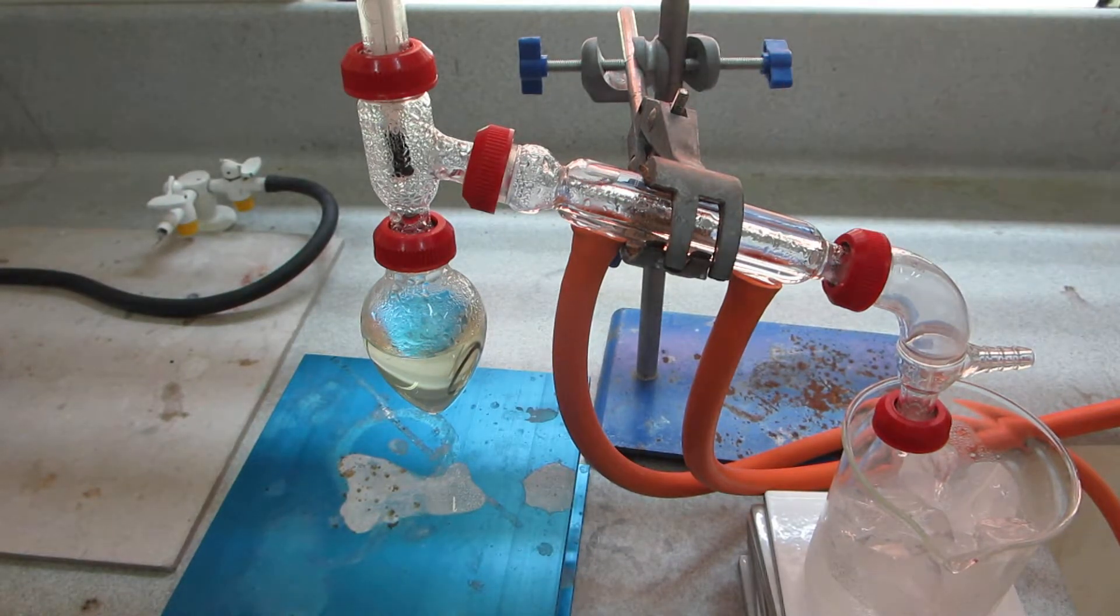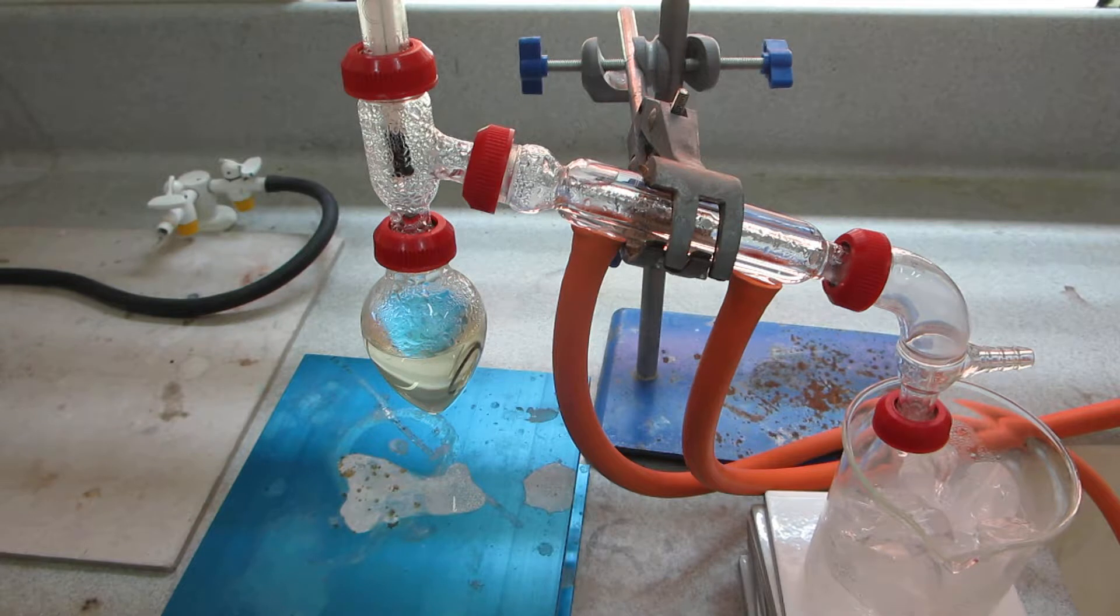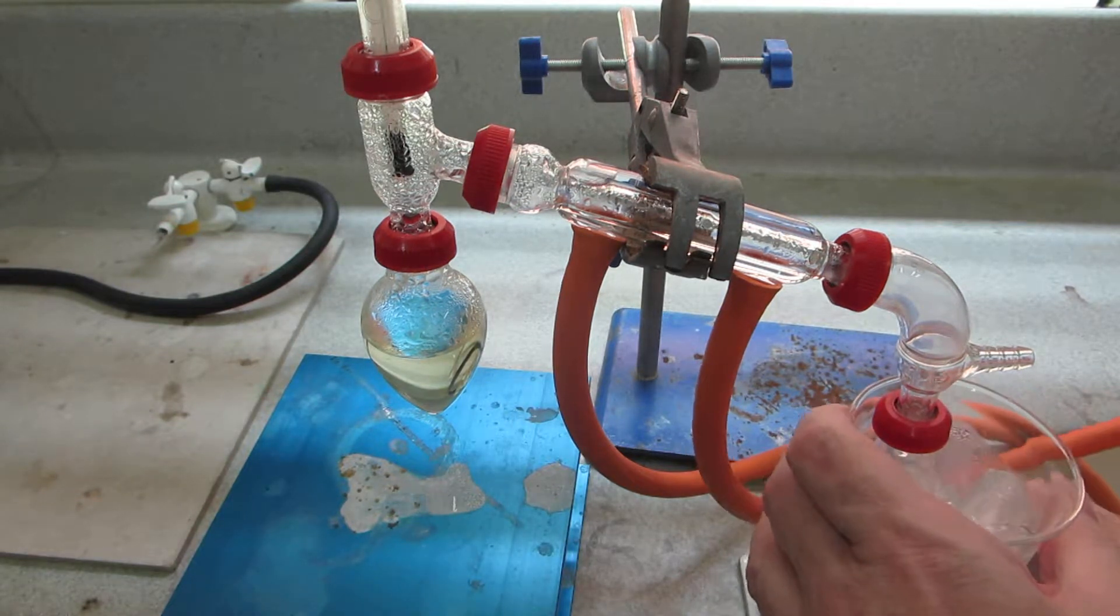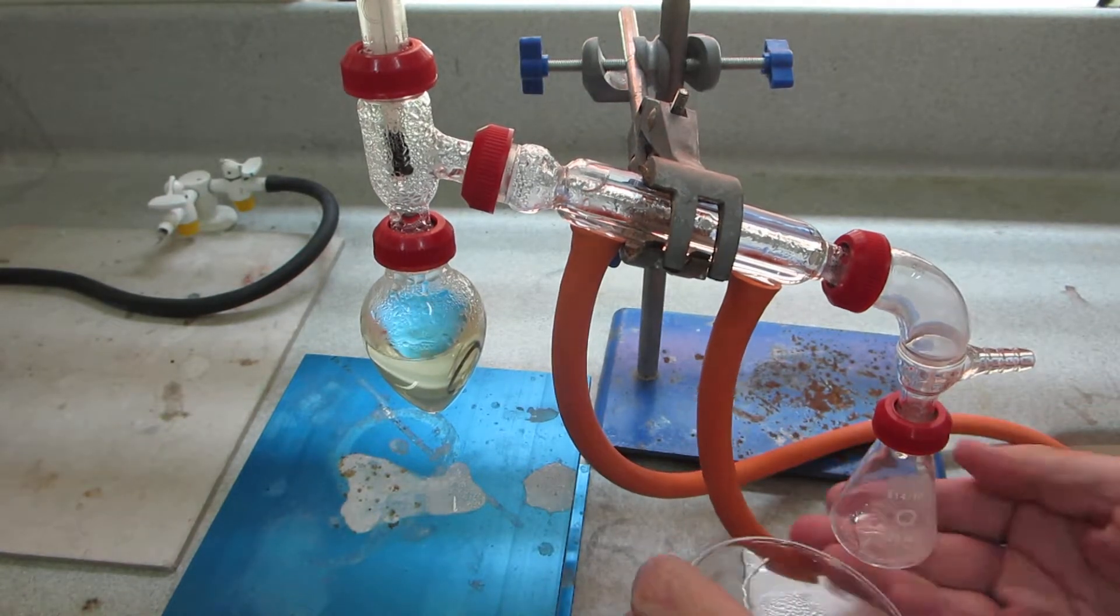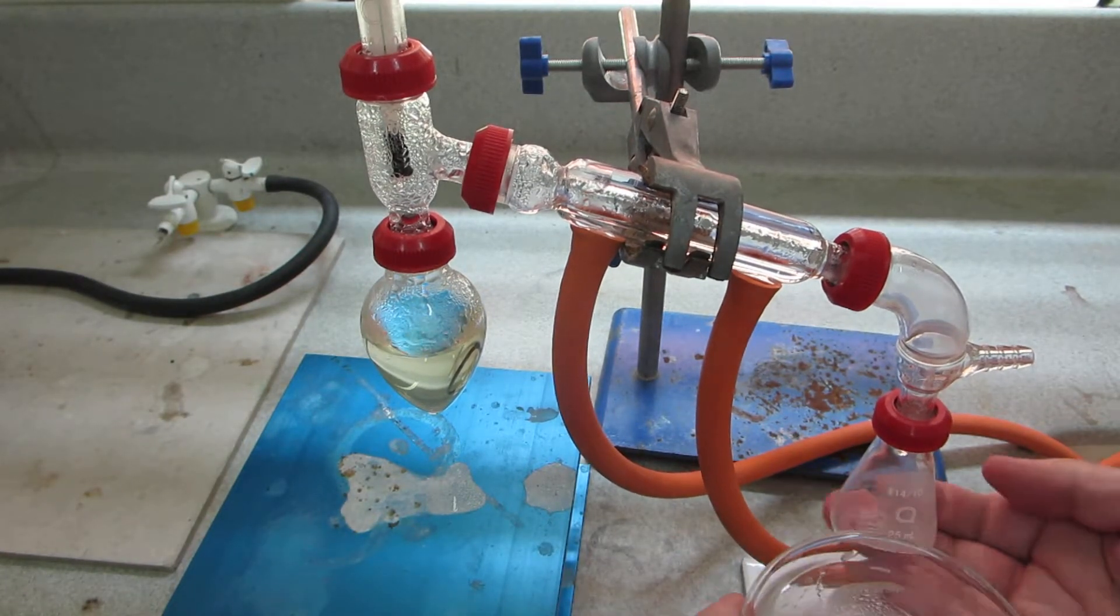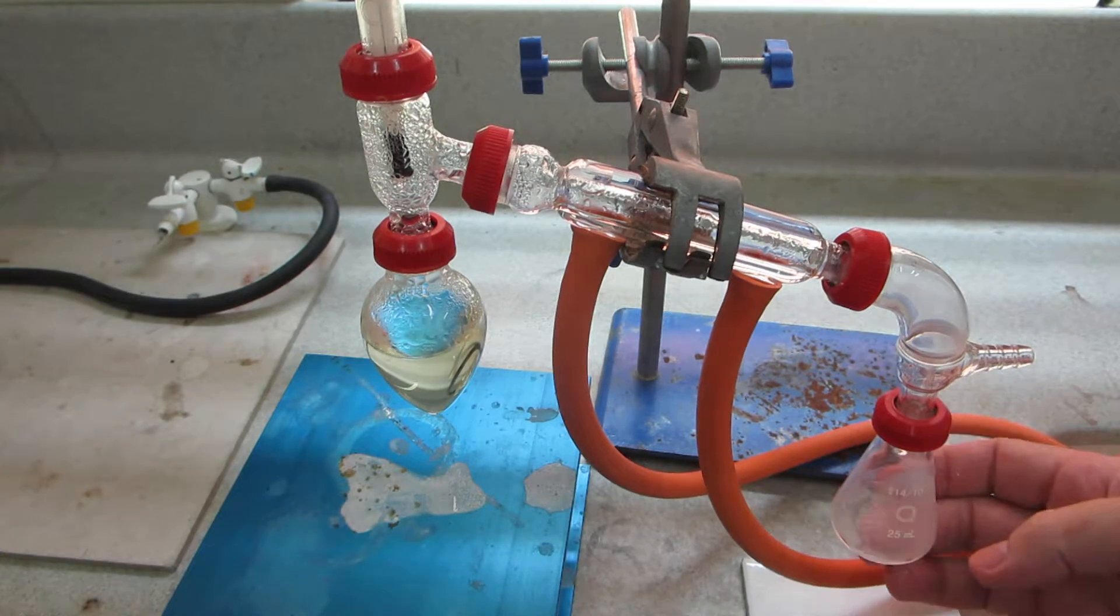We've given our system a good 20-30 minutes to cool down and now have a look at how much product we've got on the first take. In the flask here you might be able to see there's about half a mil of product, but there's a considerable volume of liquid condensed on the flask over here.